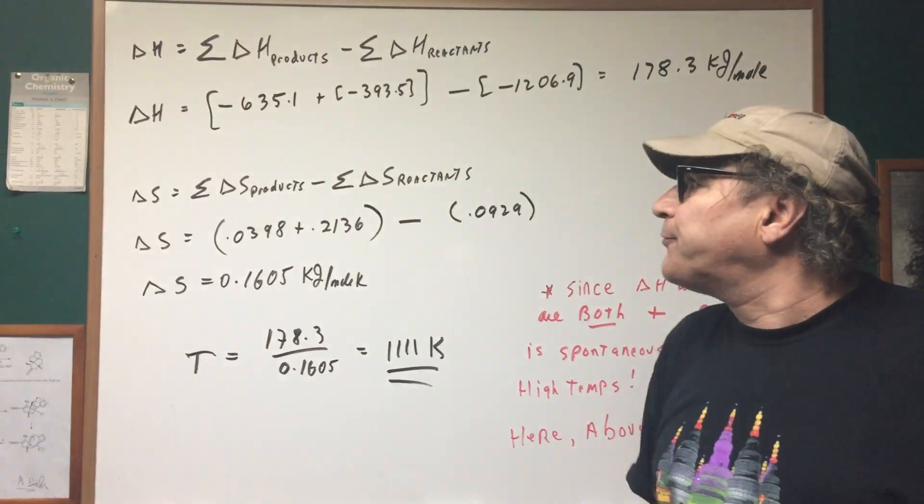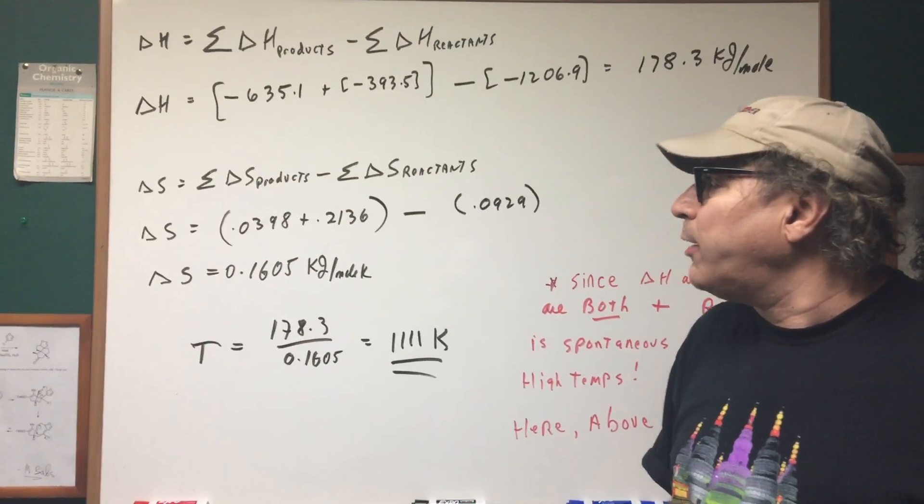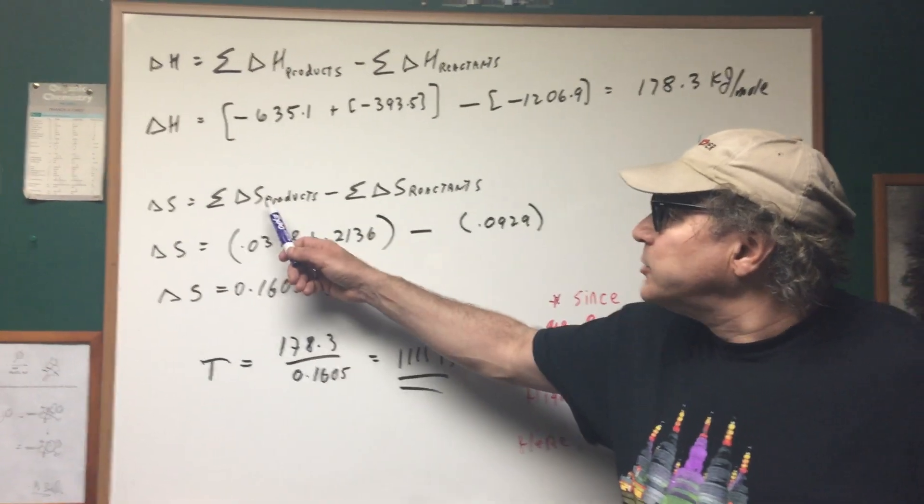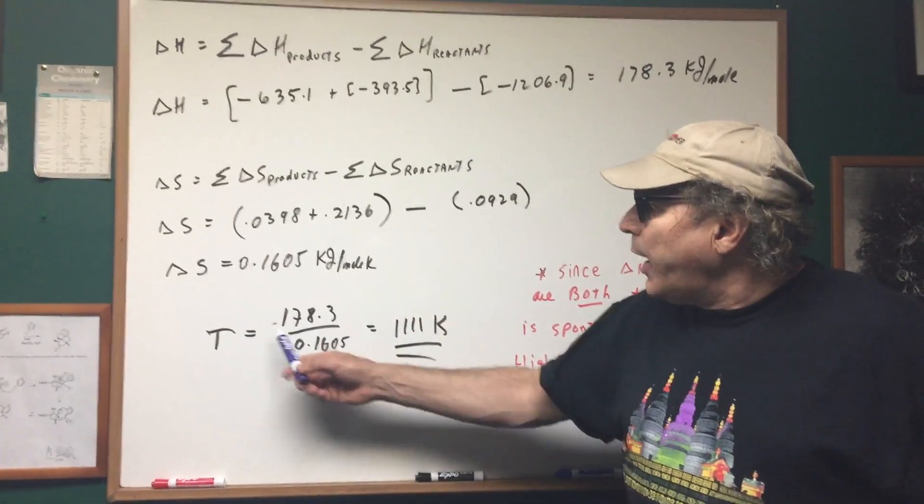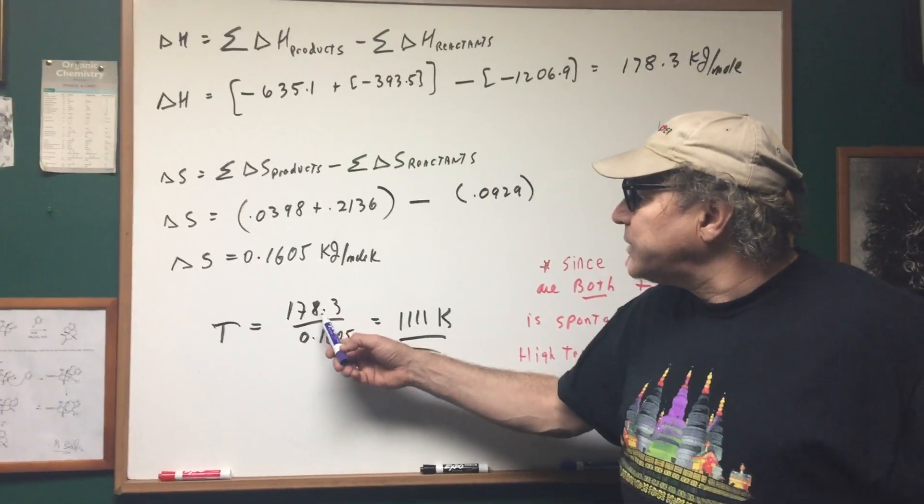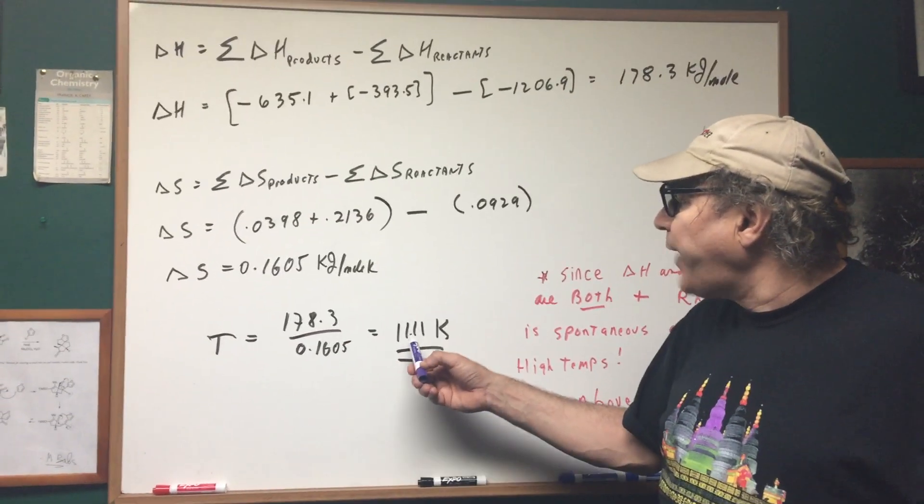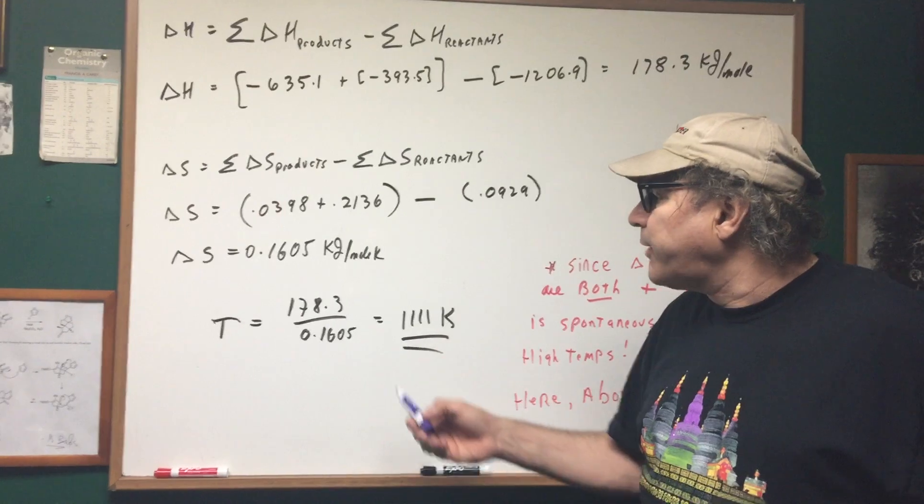You do the same thing for the Delta S, which is the entropy or the amount of disorder. It's the products minus the reactants. We plug them in and we get a value. And then we simply plug those numbers in and we get 1,111 Kelvin.